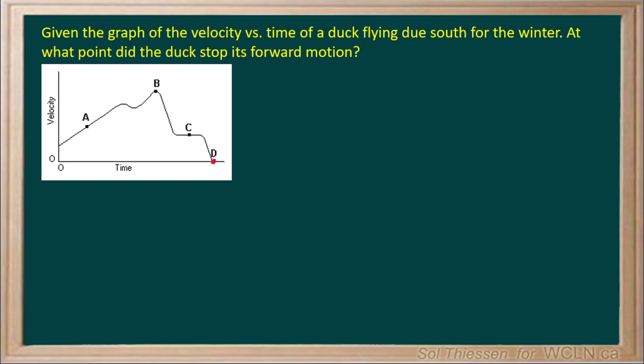At point D, we see that the velocity is finally zero, indicating that the duck has stopped its forward motion and has actually come to rest. Point D is the point where the duck stopped its forward motion.